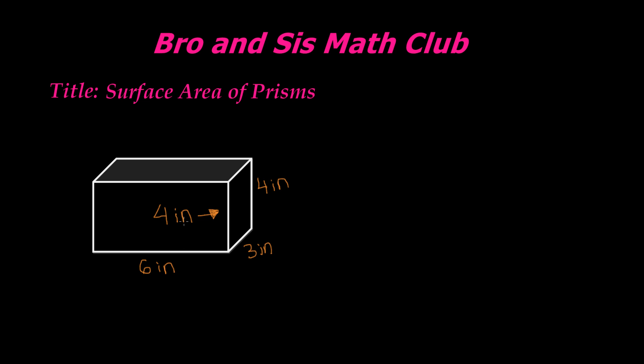So what I mean by that is, if you take a look at this prism, for example, which is a rectangular prism, we see that there are different rectangles in this prism, which are all 2D objects.